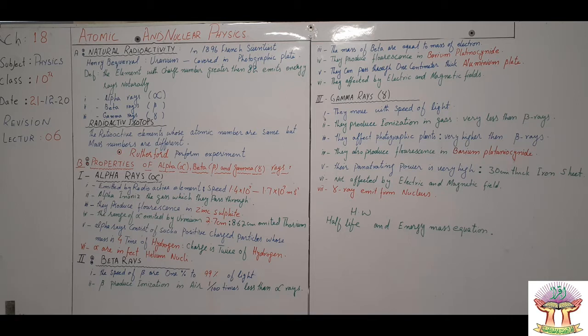Beta rays: Beta rays speed is 1% to 99% of light speed. Beta rays produce ionization in air, charge production is 1/100 times compared to alpha rays. If alpha rays produce 100 charges in air, beta rays will produce 1%.